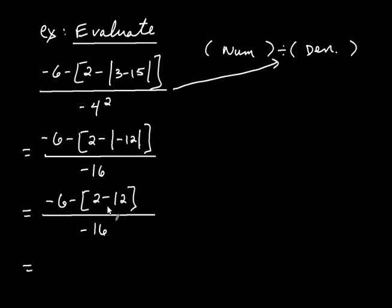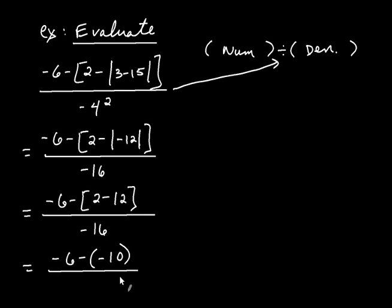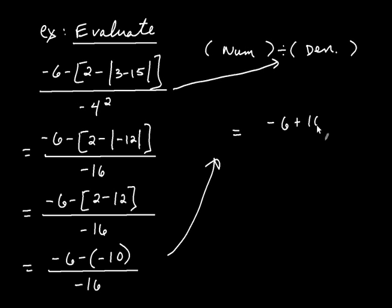Still inside these grouping symbols: 2 minus 12 is negative 10. So it's negative 6 take away negative 10, all over negative 16. Subtracting a negative, we change that to positive: negative 6 plus 10 all over negative 16. Negative 6 plus 10 is 4, divided by negative 16. A positive divided by a negative is a negative, and you can reduce 4 over 16 to give 1 fourth. So the answer is negative 1 fourth.